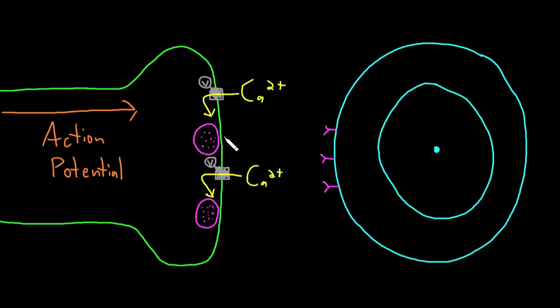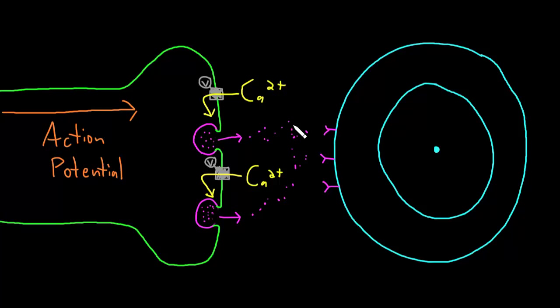Those proteins are going to cause the synaptic vesicles and the presynaptic membrane to interact and fuse — so now the inside of the synaptic vesicle is actually in communication with the outside of the neuron, with the synaptic cleft. By diffusion, the neurotransmitter molecules will exit the axon terminal, flow out into the synaptic cleft, and there will be lots of neurotransmitter in the synaptic cleft where there wasn't before.